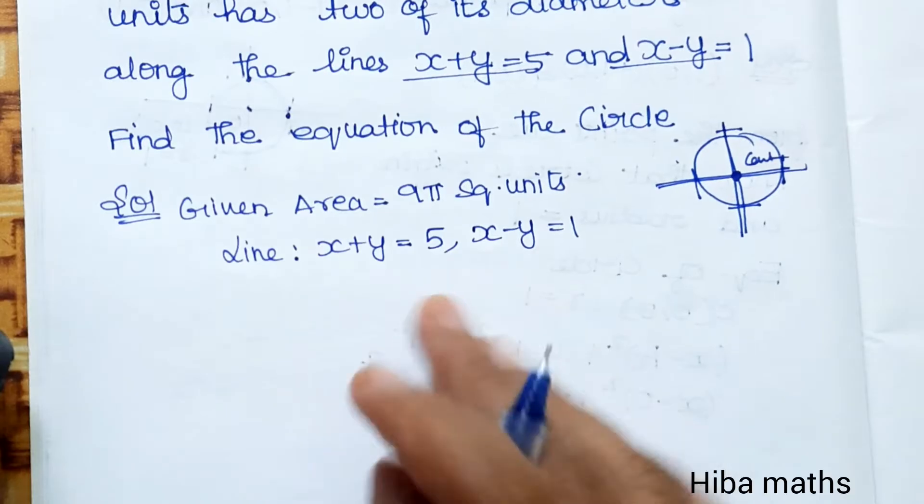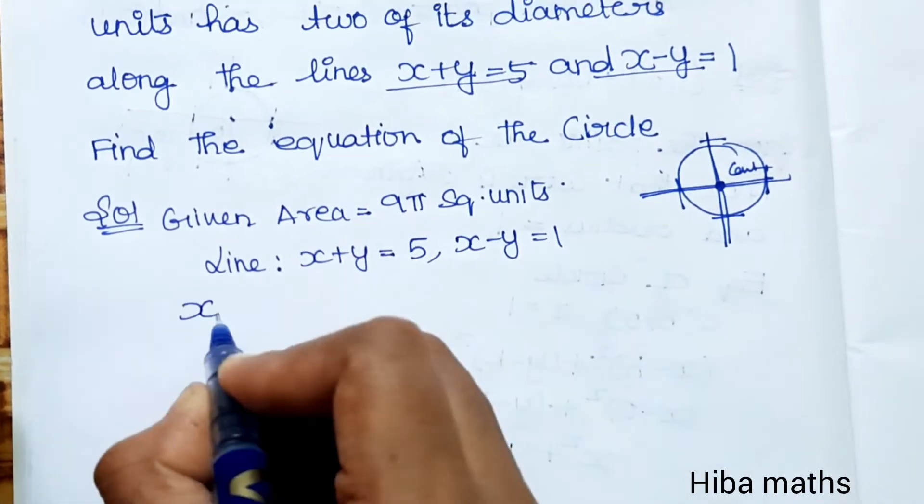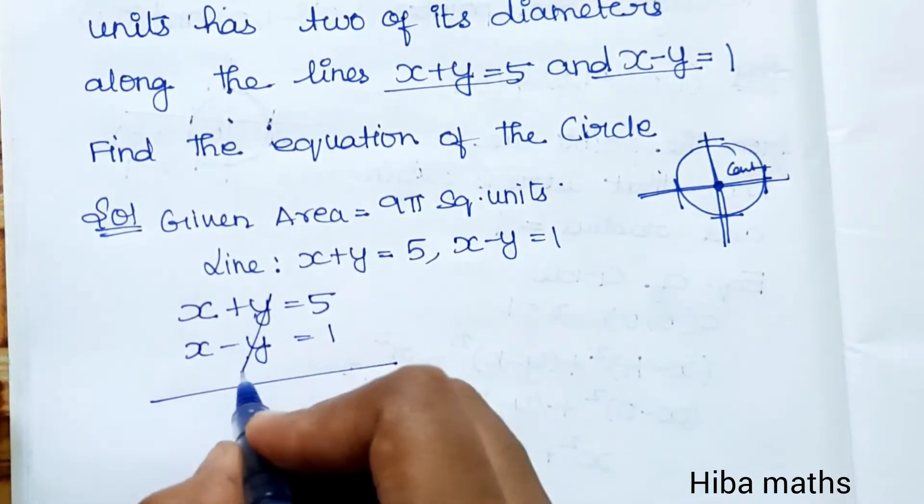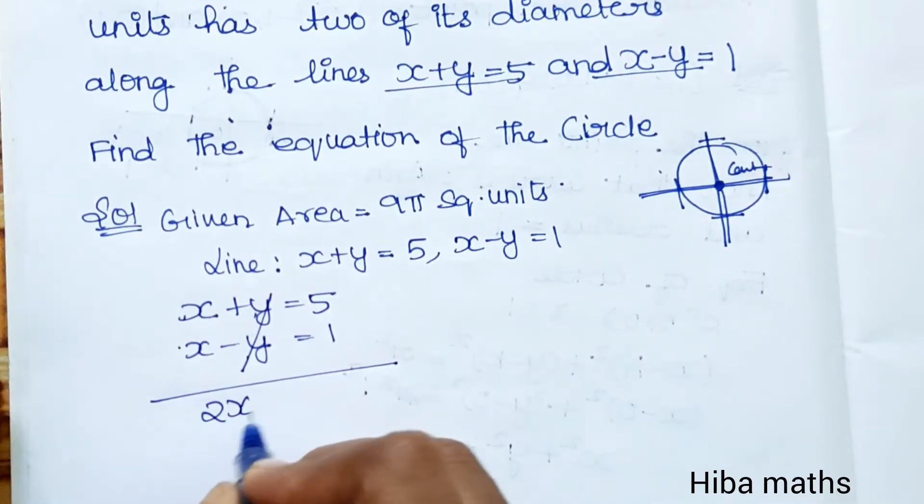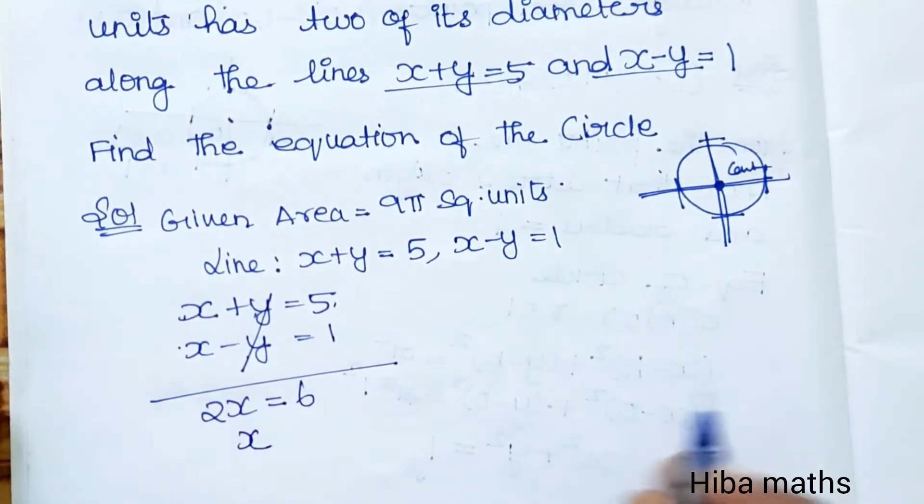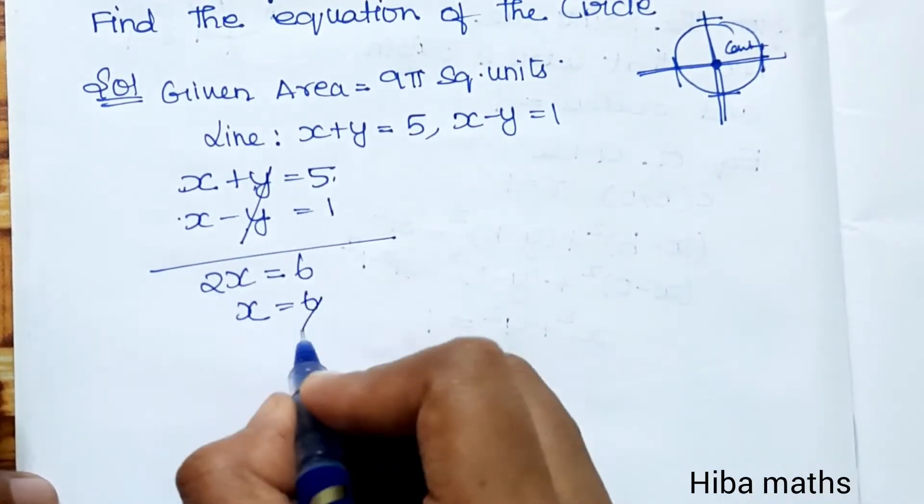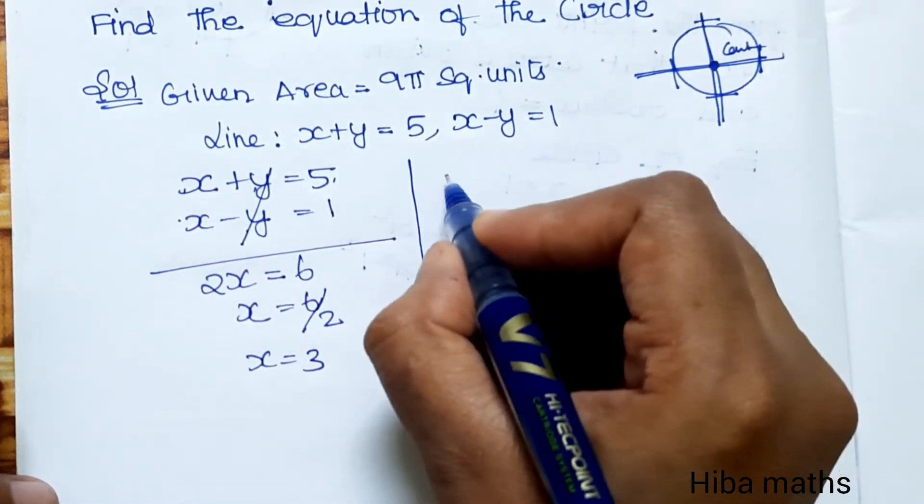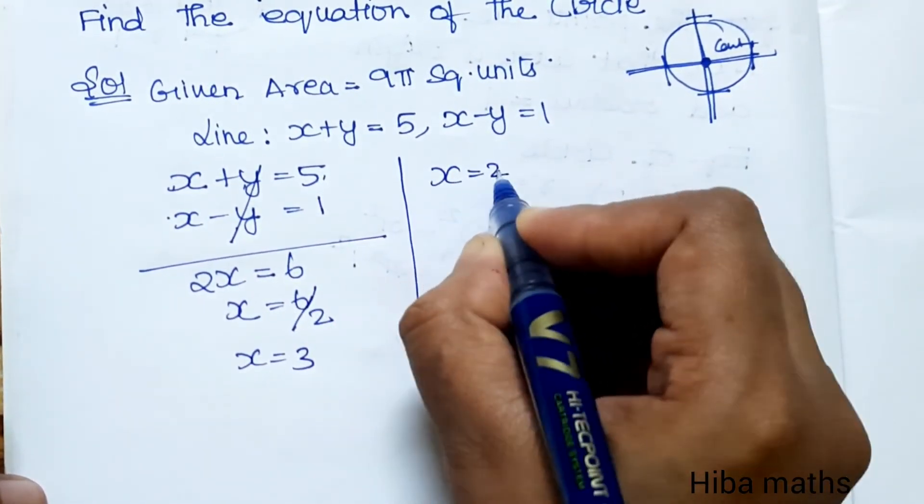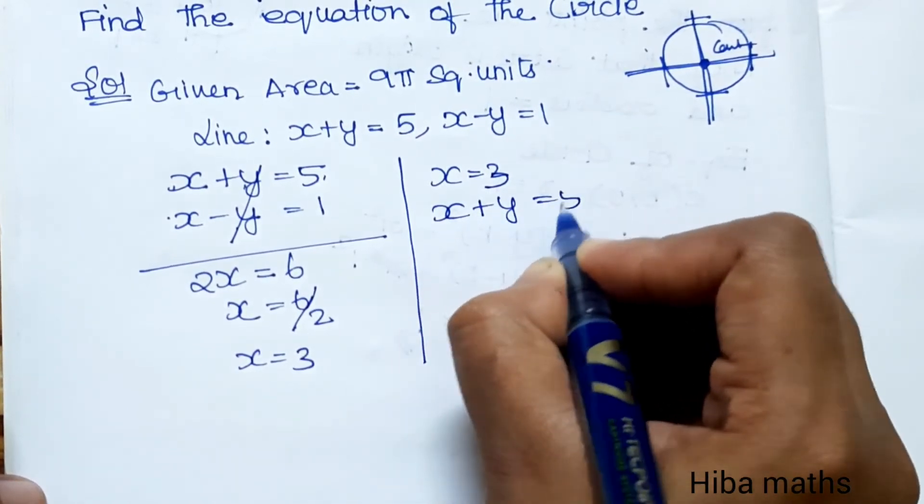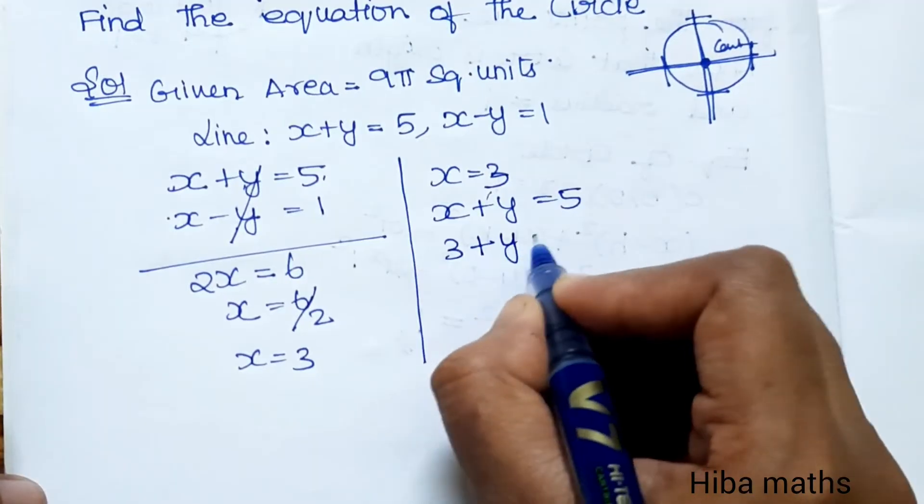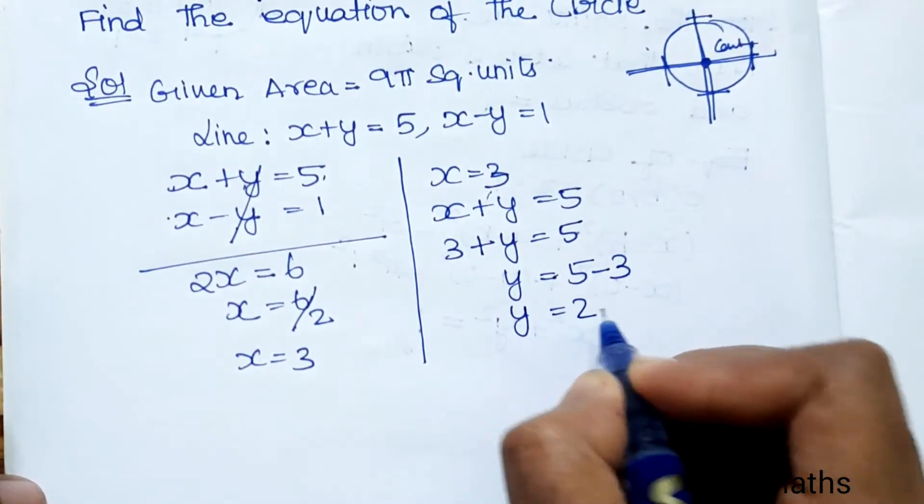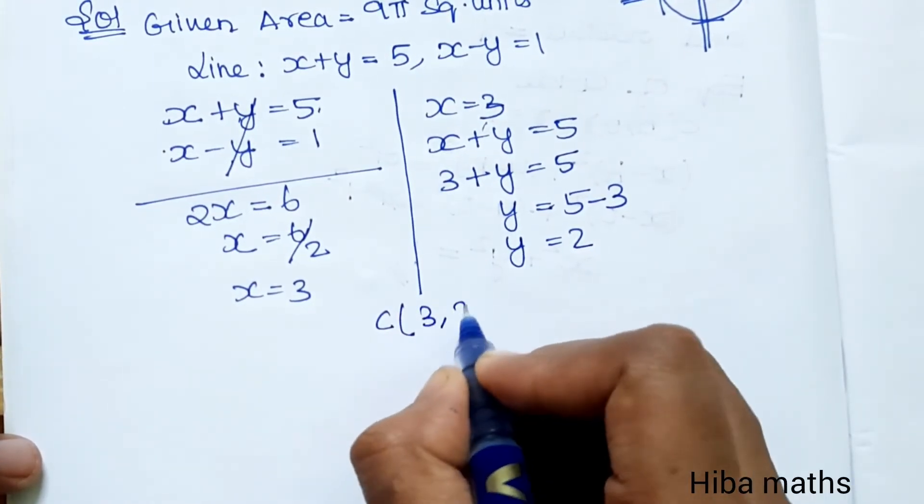First, let's find the intersecting point using elimination method. Adding the equations x+y=5 and x-y=1, the y terms cancel, giving 2x=6, so x=3. Substituting x=3 into the first equation: 3+y=5, therefore y=2. So the center is at point (3,2).